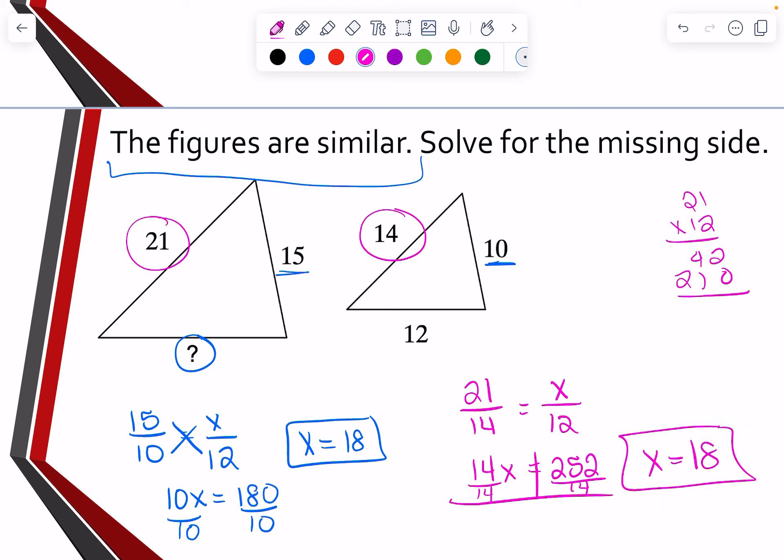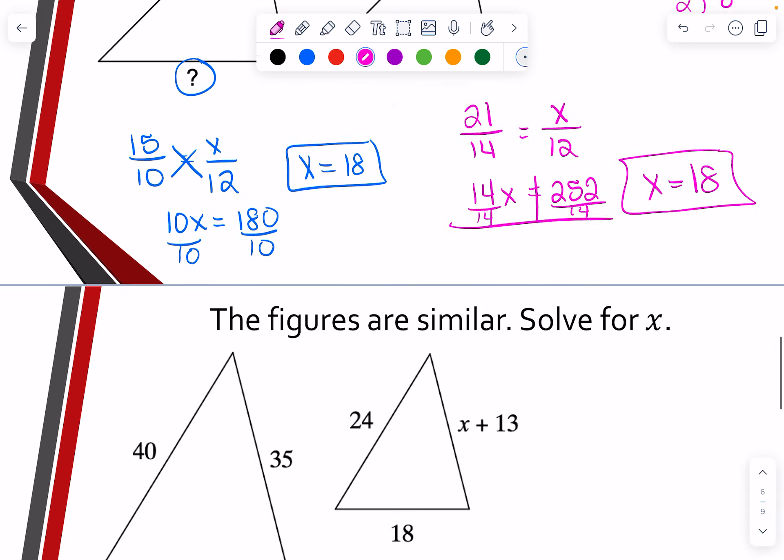Notice it doesn't matter which combination we use for our scale factor because they have to be similar. So since they have to be similar, then that scale factor has to be the same for those. So you pick one that is completely filled in. You have both parts to it. And then you set that equal to the ones that you are missing.